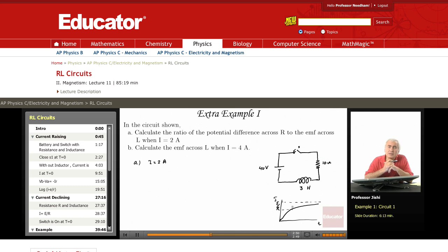So we're told when the current is 2 amperes, what is the ratio of the potential difference across R to the EMF across L? Now, when I is 2 amperes, that's in fact a simple question. The potential difference across the resistance R is just IR, which is 20 volts.